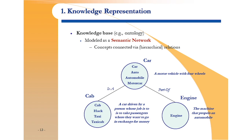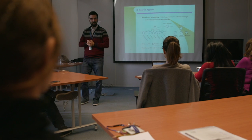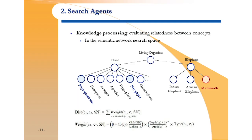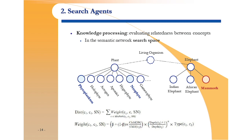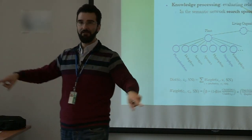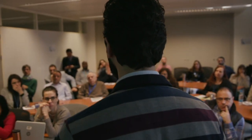How to process and navigate that graph-based dictionary and identify interesting meanings is another area called search algorithms, also a subcategory of AI. By identifying the shortest path between concepts, the computer understands which concepts are closely related. For example, mammoth and African elephant are closer to each other in meaning than Indian elephant and plant, because it takes more hops to navigate between those distant concepts.